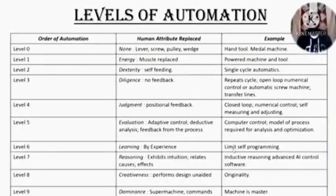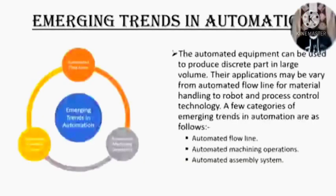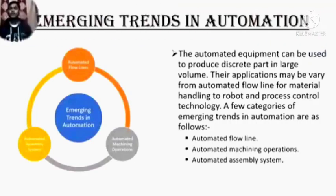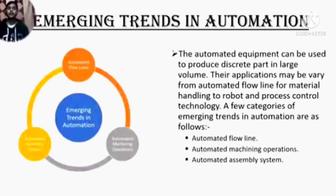Here I had drawn levels of automation. These are the following levels of automation showing which human attributes are replaced and their examples. Now, emerging trends in automation. The automated equipment can be used to produce discrete parts in large volumes. Their application may vary from automated flowlines, material handling, to robots and process control technology.